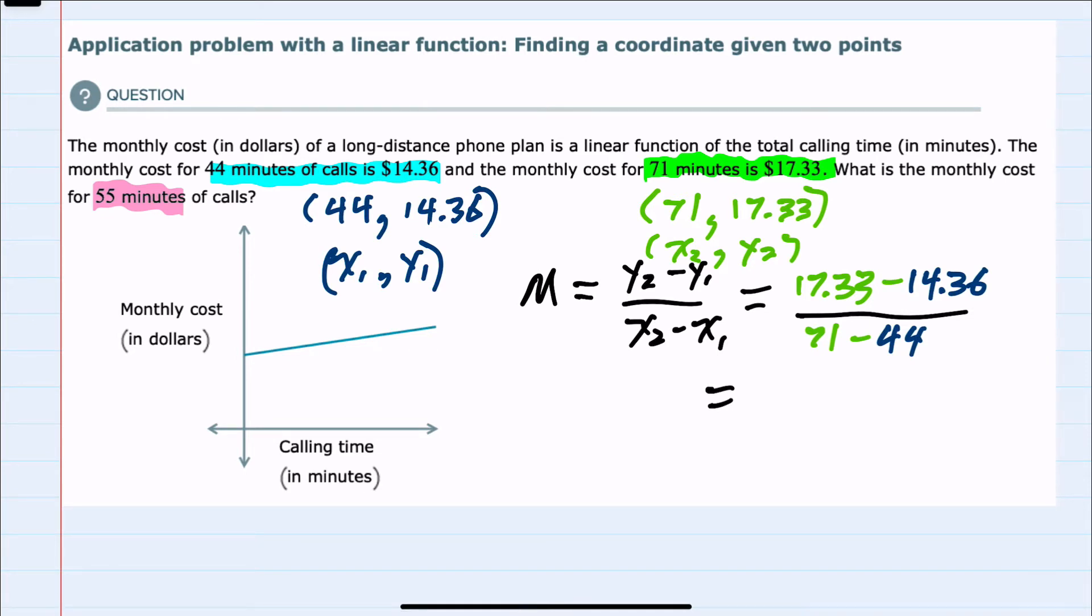Simplifying the numerator, we get 2.97, and in the denominator, 71 minus 44 is 27. So the slope simplifies to 0.11.